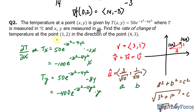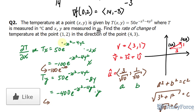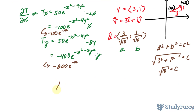We now substitute the point (1, 2) into both partial derivatives. Substituting into t sub x, you should end up with negative 100 e to the power of negative 17. Substituting into t sub y, you should end up with negative 800 e to the power of negative 17. Therefore our gradient vector is [negative 100 e to the negative 17, negative 800 e to the negative 17]. Now we'll multiply that by the dot product of our unit vector u-hat.